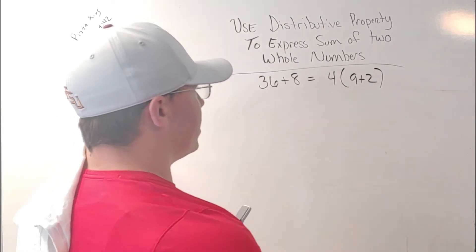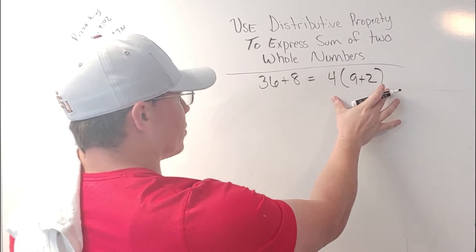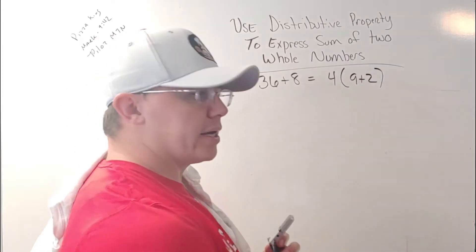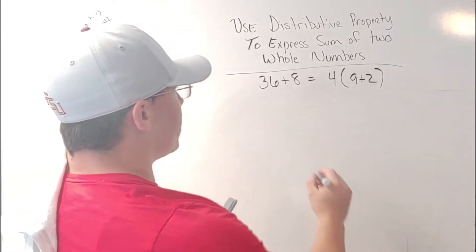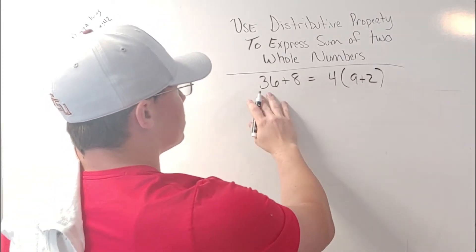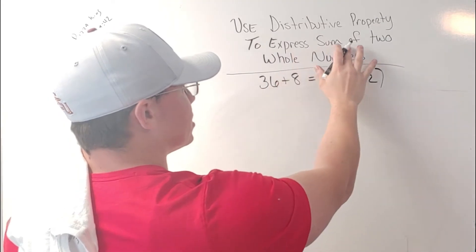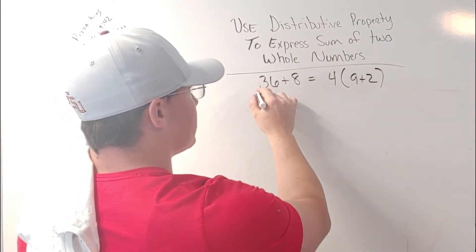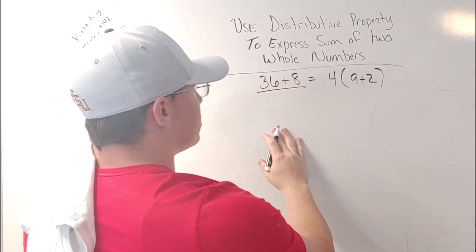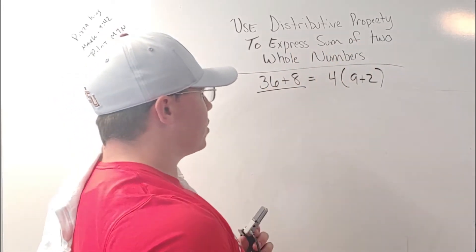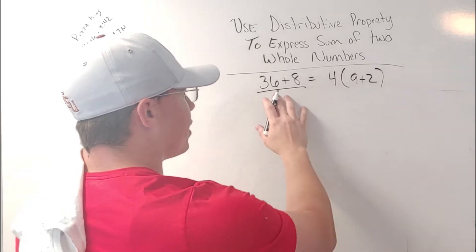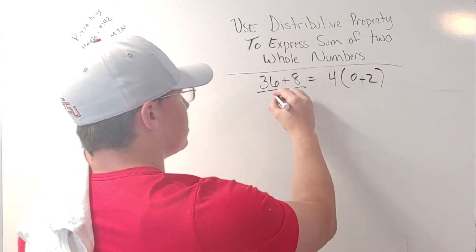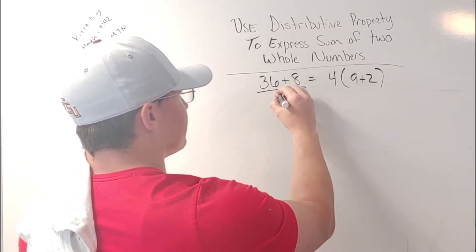So this is your distributive property — you're going to distribute it, kind of break it up into pieces. The original expressed the sum. Remember, the sum is the answer of an addition problem. So 36 plus 8 is going to give us 44.